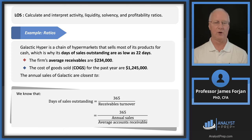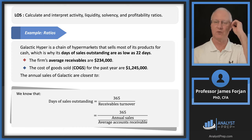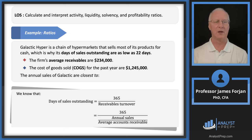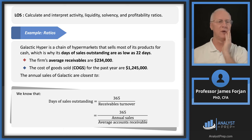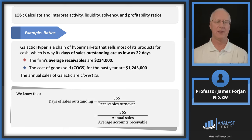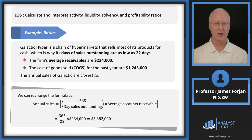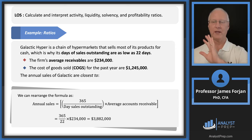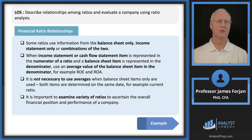The Institute frequently asks you to compute ratios and sometimes gives a problem where you solve using ratios. For example: Galactic Hyper, days outstanding 22 days, average receivables $234, cost of goods sold $1.2 million. You rearrange the days sales outstanding formula to back into annual sales, and you get almost $4 million in sales. Take pictures of these ratio slides.